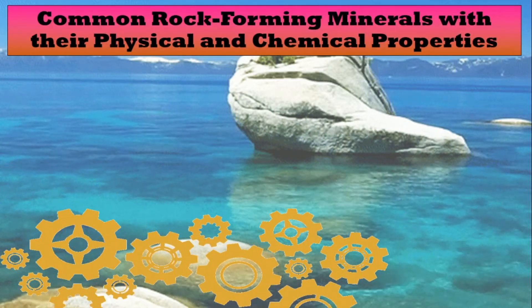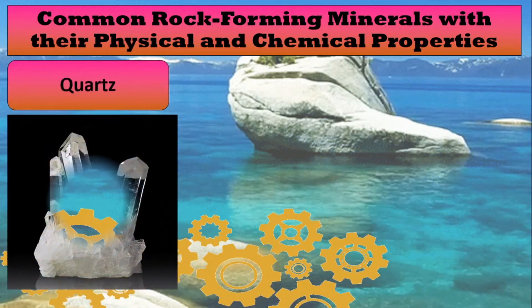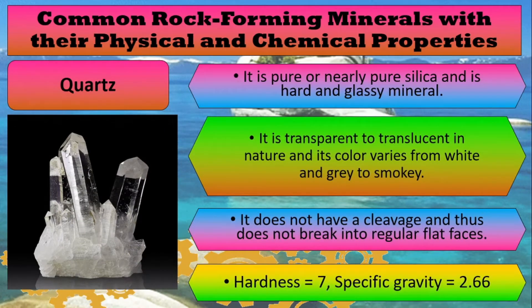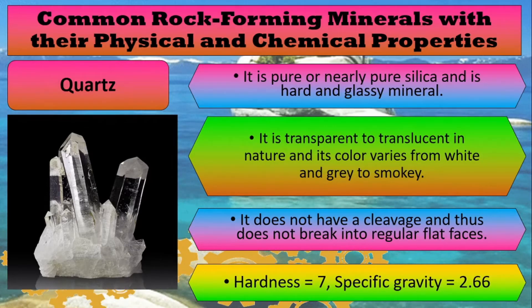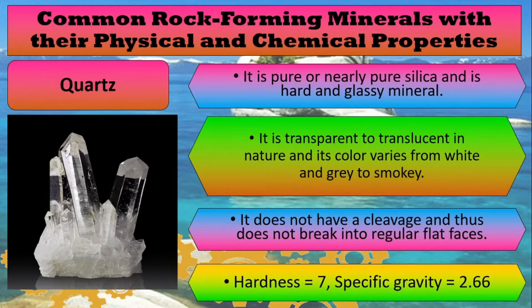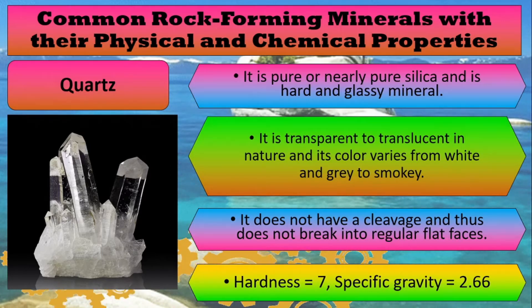Here are common rock-forming minerals with their physical and chemical properties. First, we have quartz. Quartz is a pure or nearly pure silica and it is a hard and glassy mineral. It is transparent to translucent in nature and its color ranges from white to grey to smoky. It does not have cleavage, thus it does not break into regular flat faces. Quartz has a hardness of 7 and a specific gravity of 2.66.